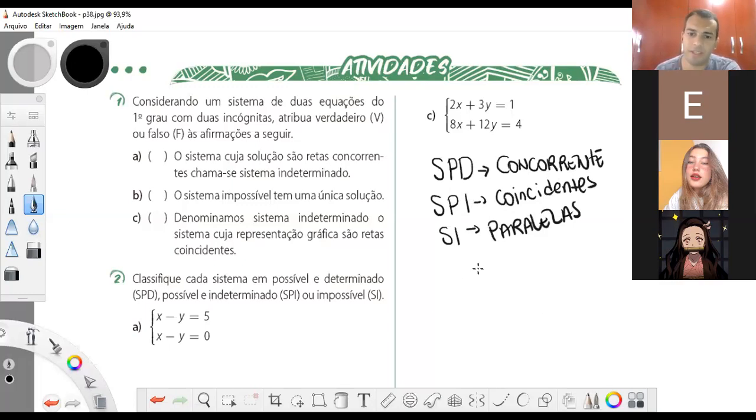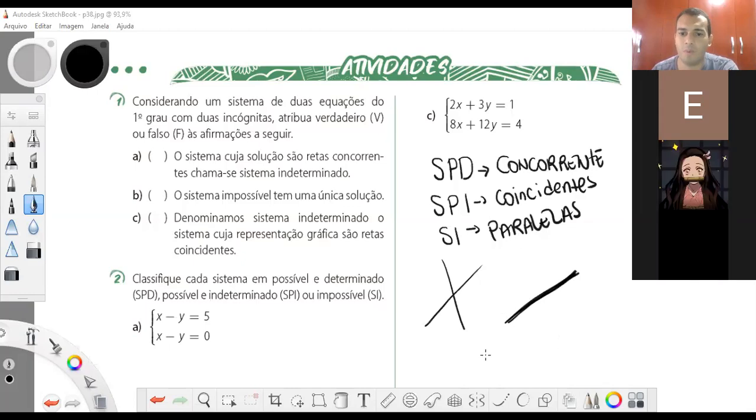Retas concorrentes são aquelas retas que em algum momento vão se encontrar. Retas coincidentes é quando uma reta está em cima da outra. Então, as retas são iguais. E retas paralelas são... essa é a página 14. Página 38. São aquelas que nunca vão se encontrar.